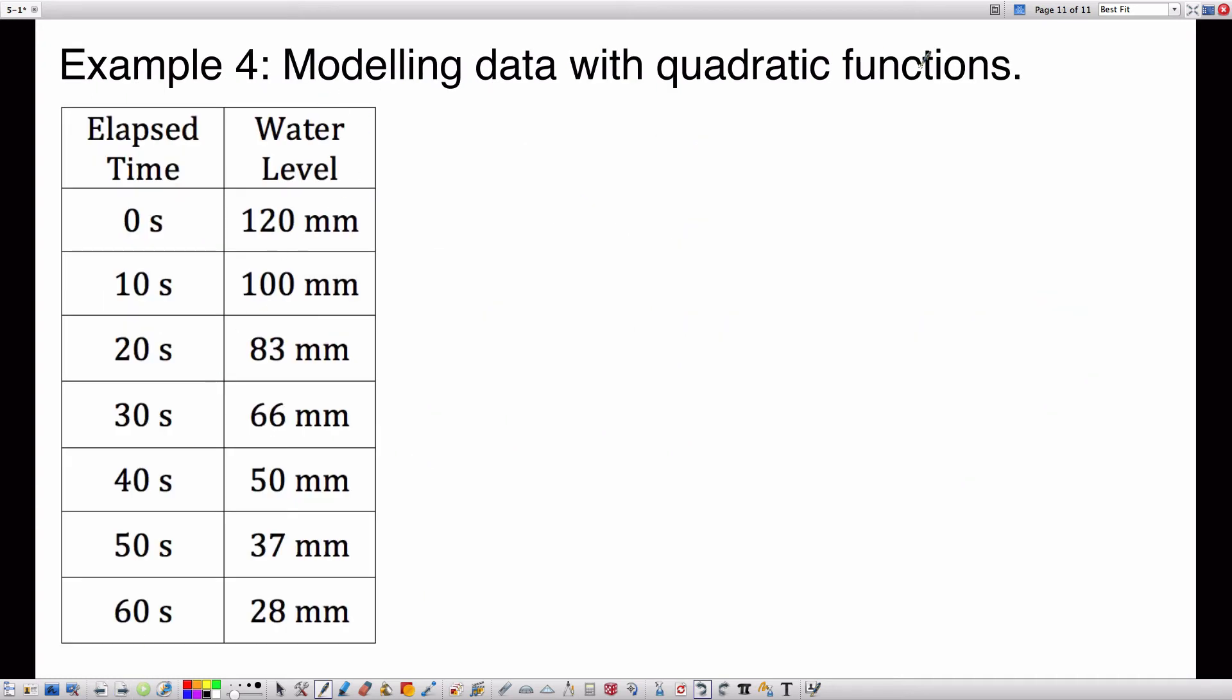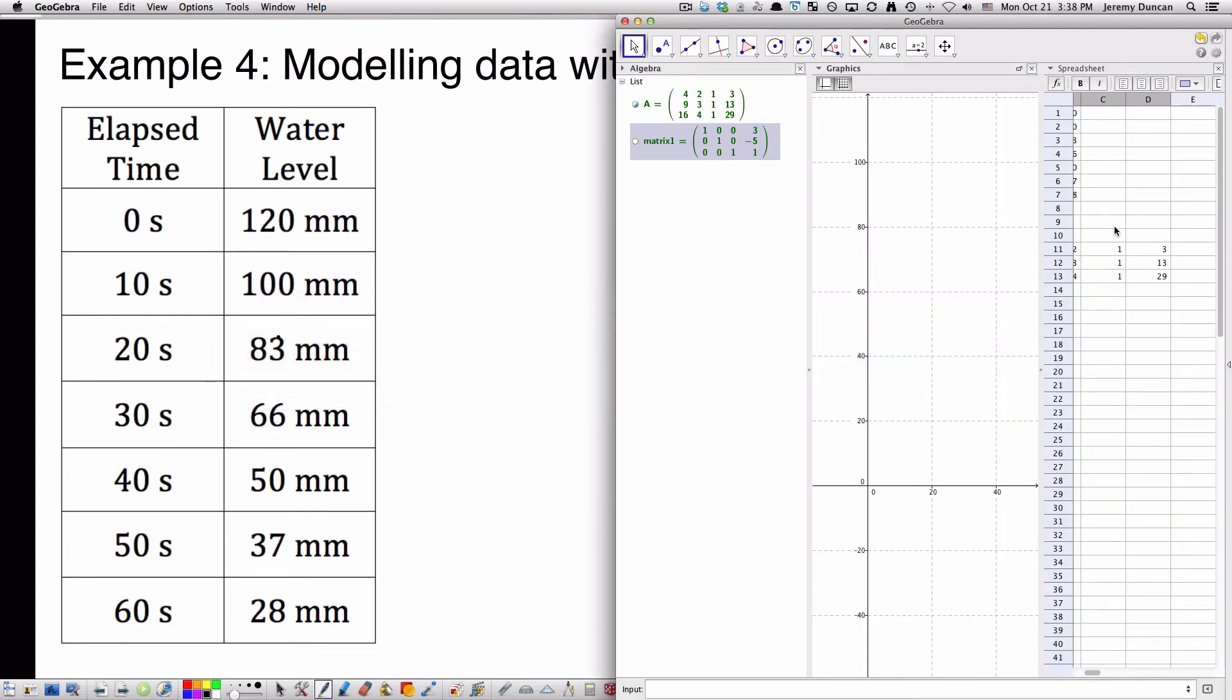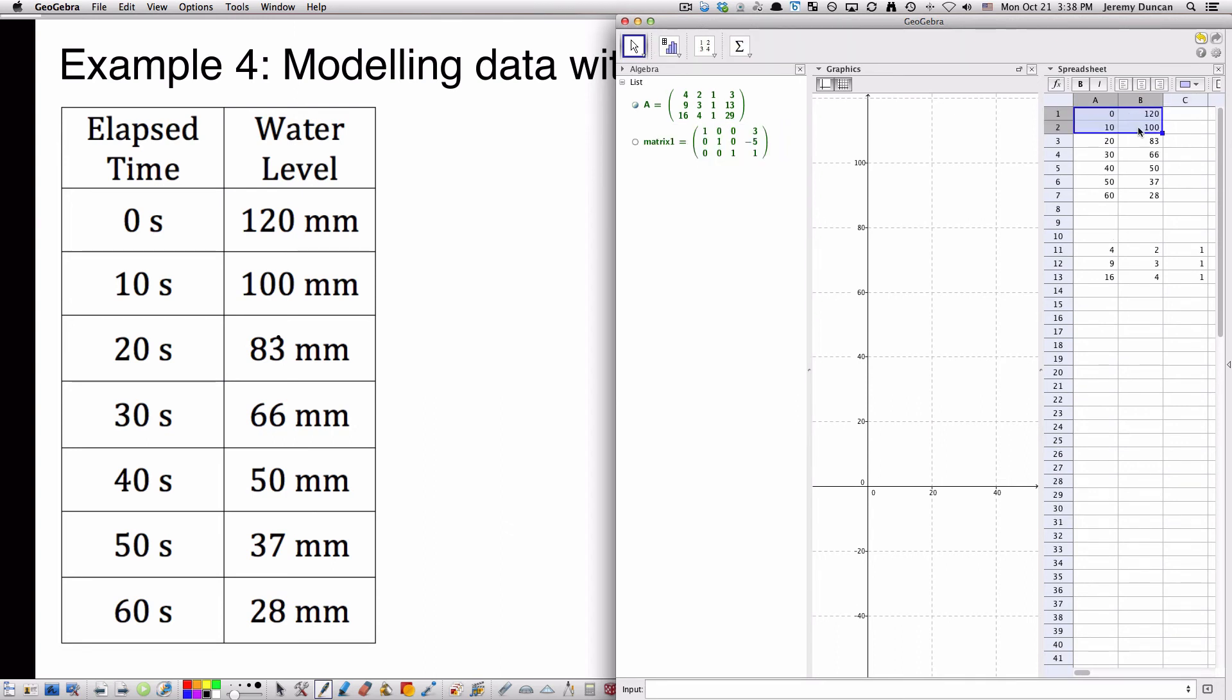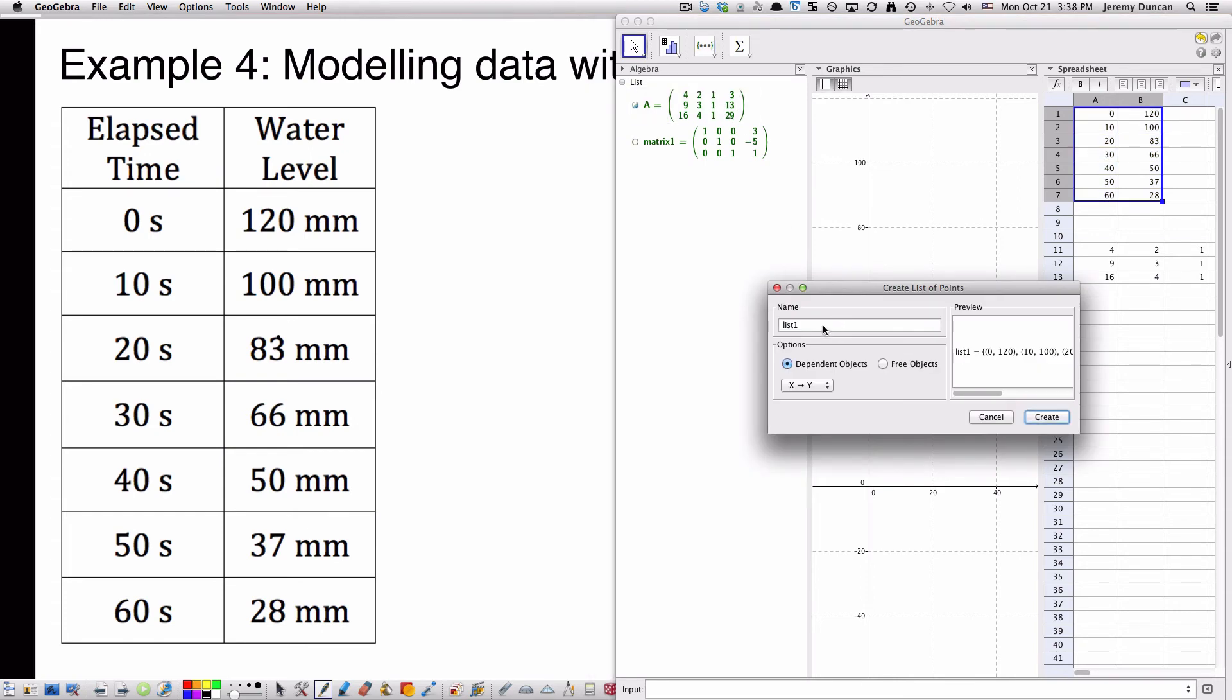Example 4 is modeling data with quadratic functions. Here I have elapsed time and water level, and this is for a tank that is draining water. So what you're going to do is you're going to take these points and plug them into some software. I'm going to use GeoGebra. You can do this with a calculator also. Let's scroll up. I have my data here. And what I'm going to do with that data is I'm going to create a list of points. I'm going to call the list points, and click create.